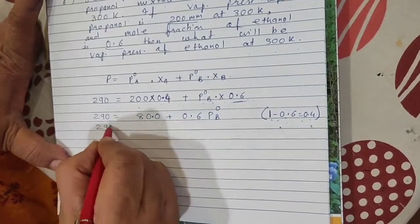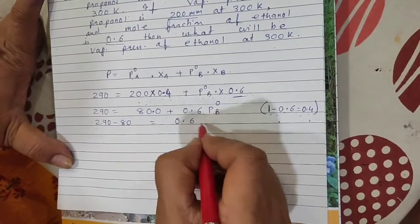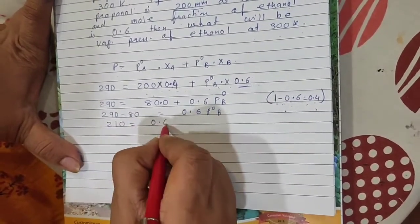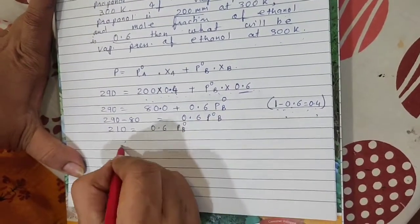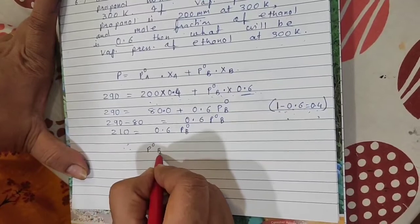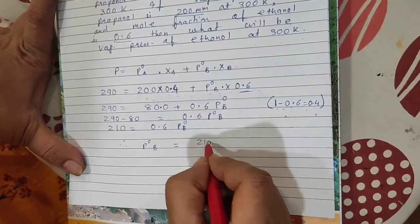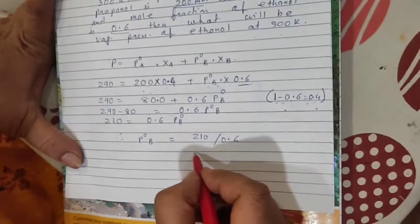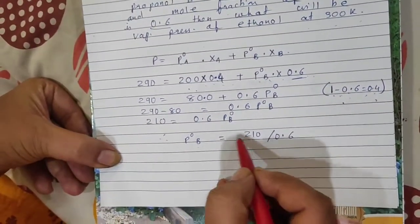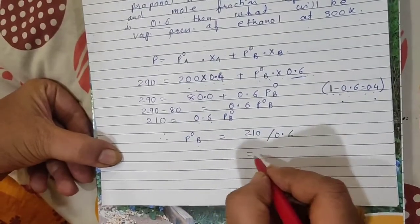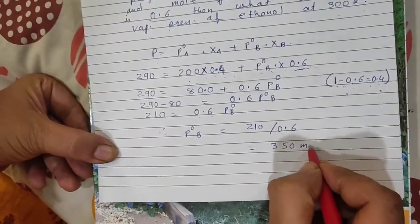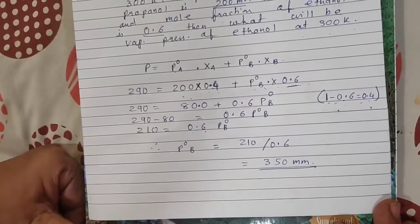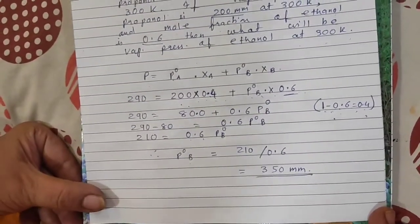We will write 290 equals 200 times 0.4 is 80 plus 0.6 Pb°. Therefore 290 minus 80 equals 0.6 Pb°. 210 equals 0.6 Pb°. Therefore vapor pressure of ethanol is 210 divided by 0.6. Pb° equals 210 divided by 0.6, answer is 350 mm. For today, this much revision. I am giving 5 or 6 questions to solve by yourself. When you solve, send on my personal WhatsApp number. I will check.